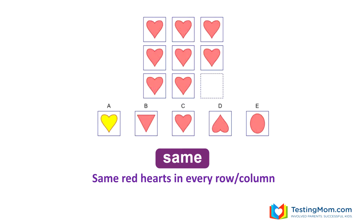There are seven main rules. First, and this is the easiest rule, is the serial reasoning puzzle where every figure inside is the same. C is the answer.